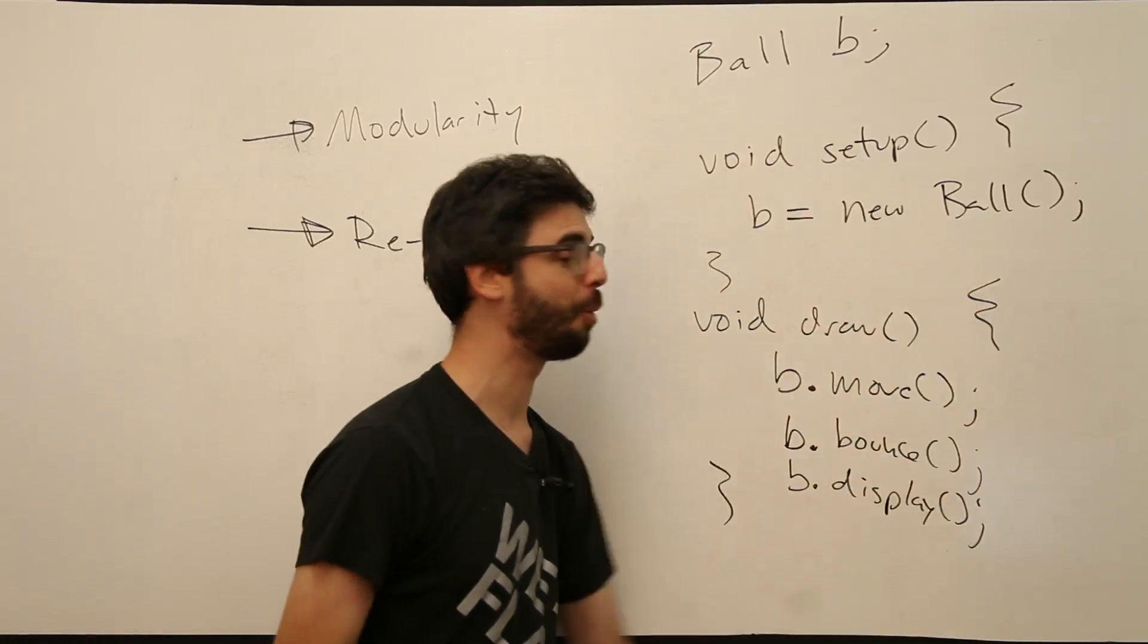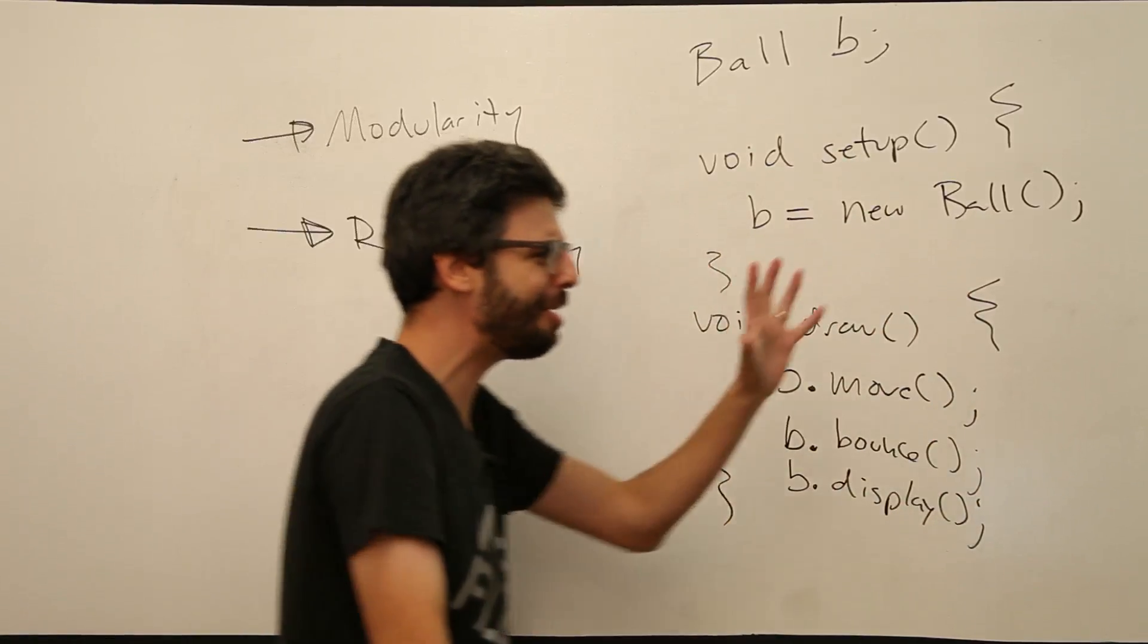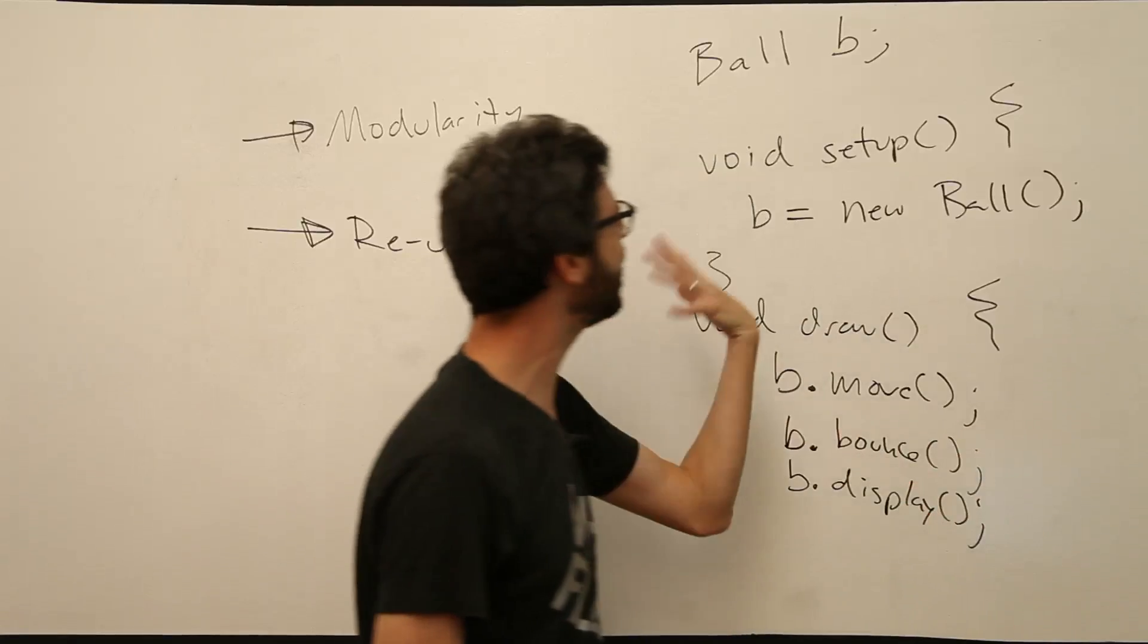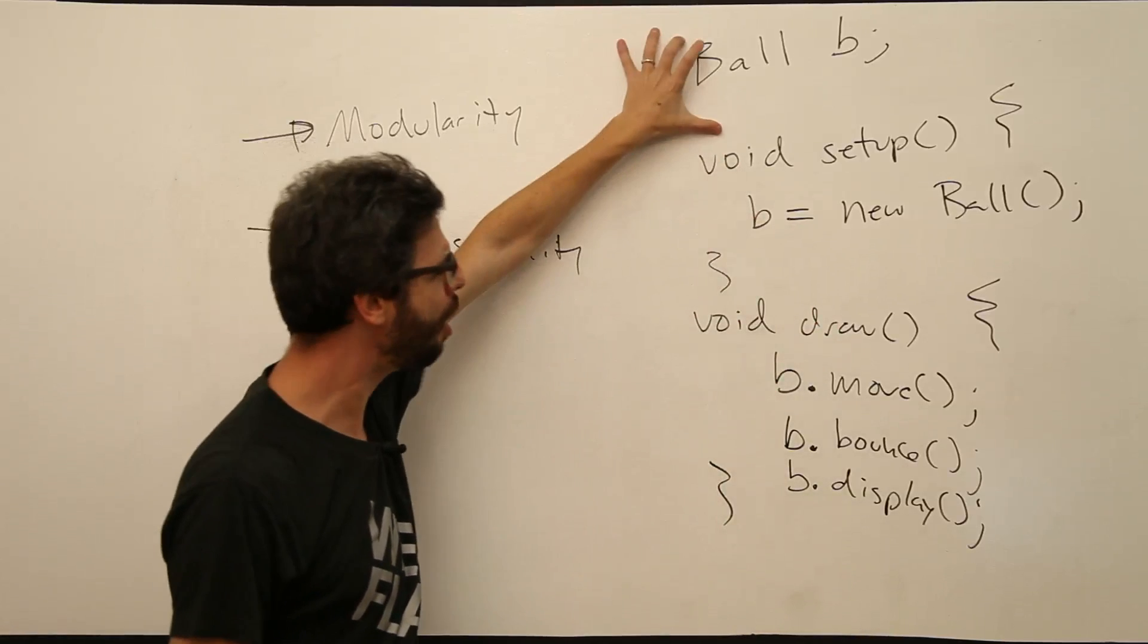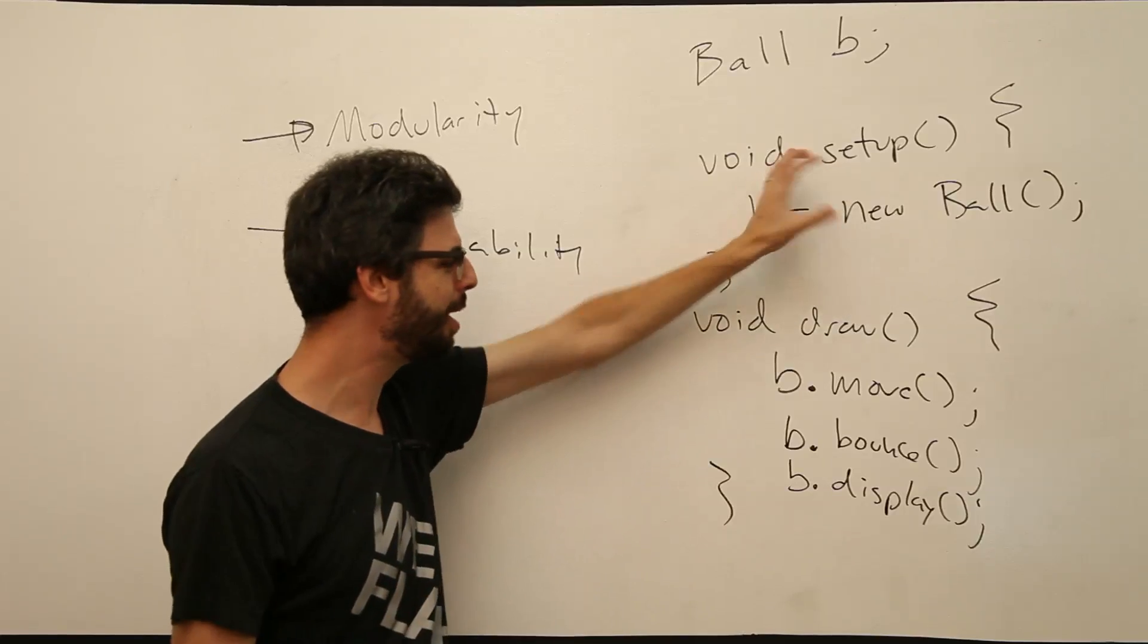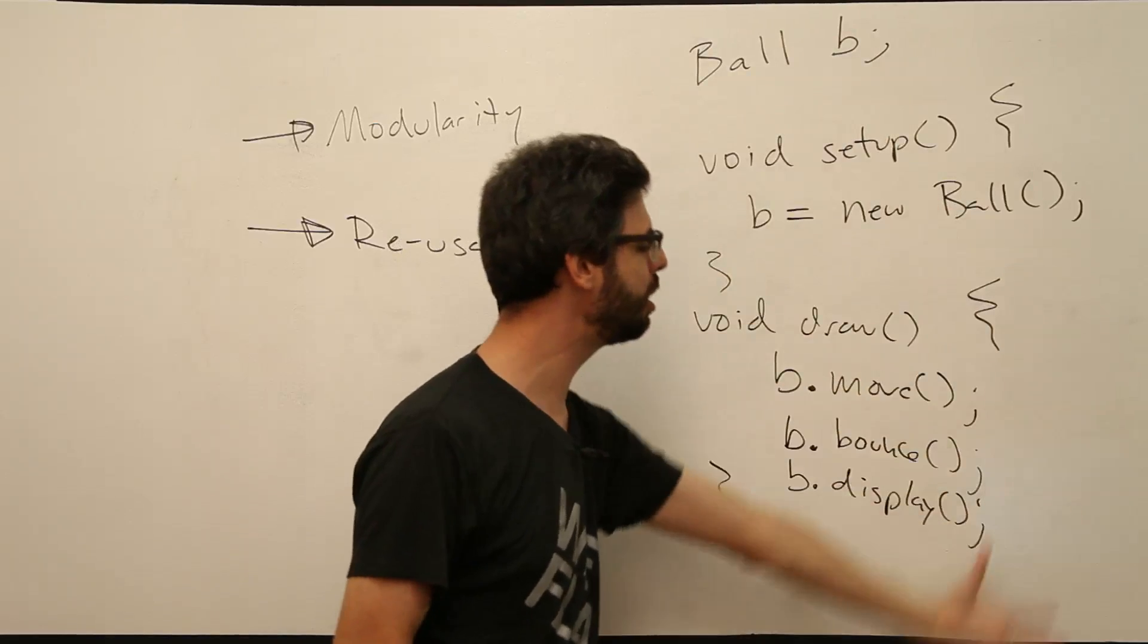This is where we're going towards. This is where we want to be. Look at this. It's so beautiful. This program is so nice and relaxing. We have a ball. We're going to start that, make that ball in setup and we're going to move that ball, bounce that ball, display that ball. We're going to ask it to do that. This is more readable.